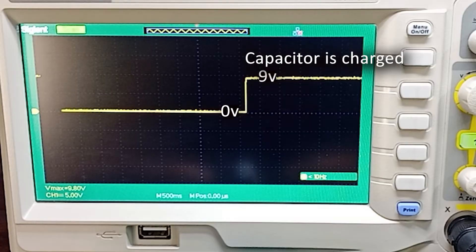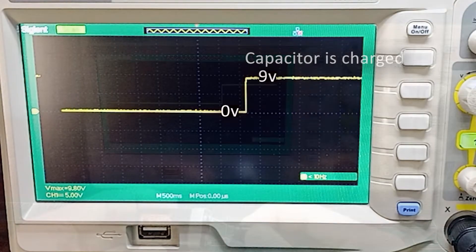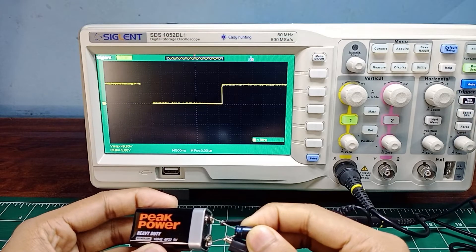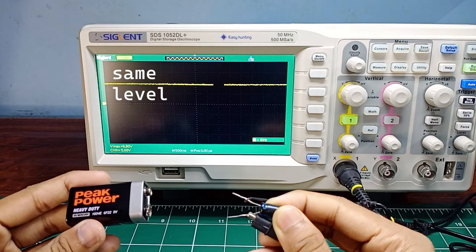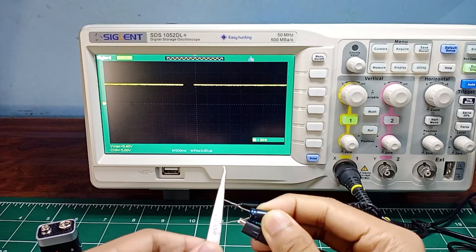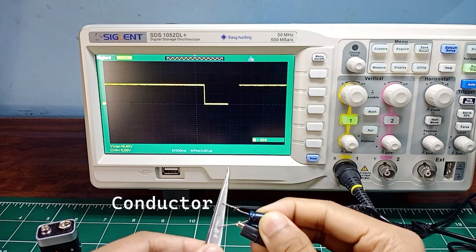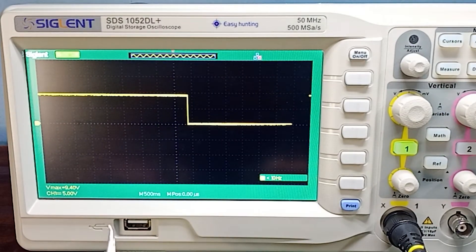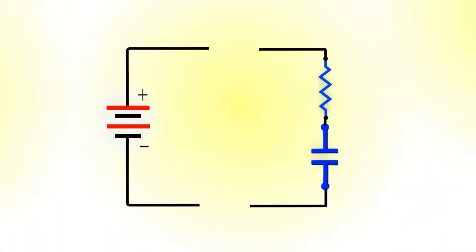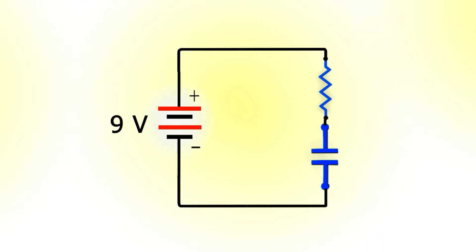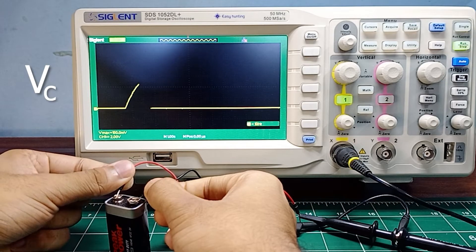The capacitor is now charged. Even if the voltage source is removed, the voltage across the capacitor remains at the same level, until you short the two leads of the capacitor using a conductor, which immediately discharges it. Next, let's try connecting a resistor in series with the capacitor and then connect it to the voltage source. This time, the voltage across the capacitor does not increase instantly, but takes time.